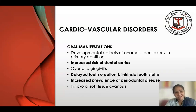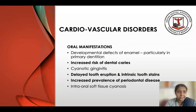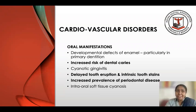What are the important oral manifestations seen in children with cardiovascular disorders? One, there can be developmental defects of the enamel, particularly in the primary dentition. There is an increased risk of dental caries — let's not forget the medications they're taking on a daily basis, which being children usually end up being sweetened syrups. We can also look for delayed tooth eruption, an increased prevalence of periodontal disease, and very rarely some cyanotic gingivitis.